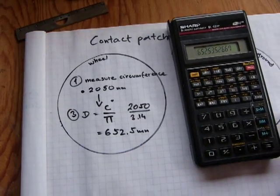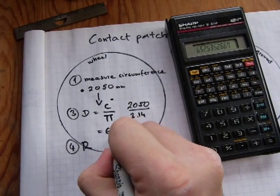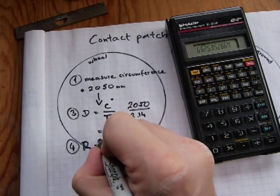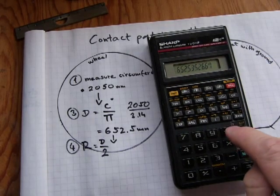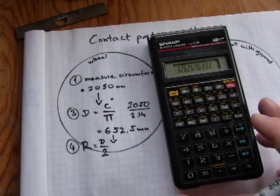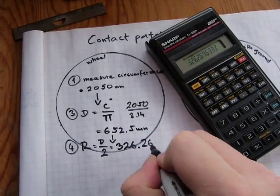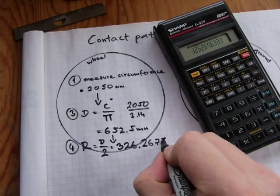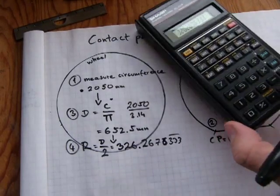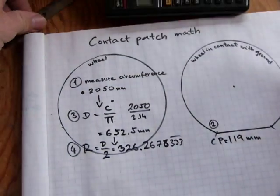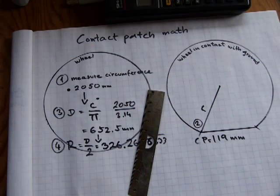Step four: I need the radius calculated from this diameter. Take the diameter and divide it by two. So I divide by two and get 326.2676333 millimeters. That radius is important because that radius number is going to plug in here — there's your radius of the wheel that we just calculated.